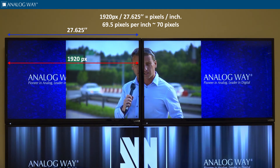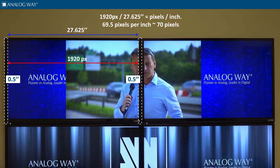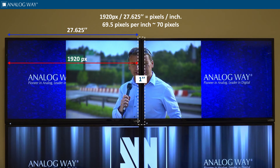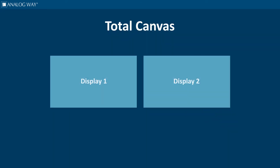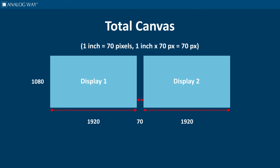Now we find the physical width of the bezel by measuring the gap or bezel of both the left and the right displays combined. This total bezel is 1 inch. We know how many pixels per inch the display is from our previous measurement. We now know that the bezels account for 70 pixels, and we can determine the total video canvas we need to process by adding the numbers together: 1920 plus 70 plus 1920 equals 3910 by 1080.